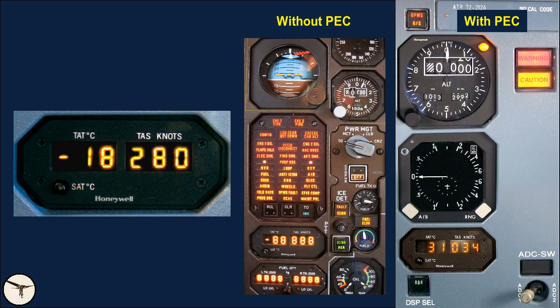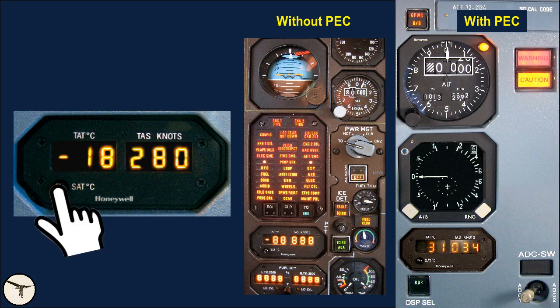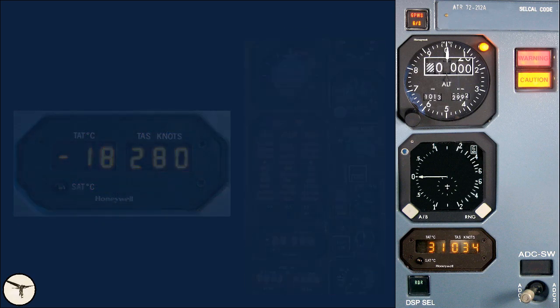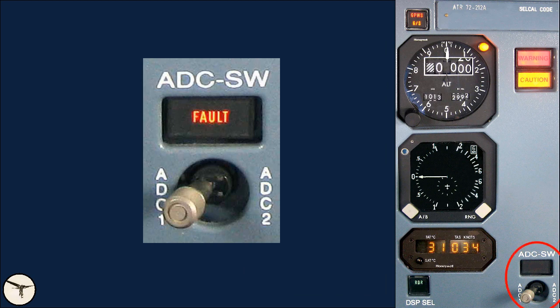The combined temperature and true airspeed indicator, depending on the ATR variant, is located below the captain's VSI or below the CAP. It shows total air temperature, TAT, and true airspeed, TAS. When you press the SAT push button, the temperature indicator shows the static air temperature. The air data computer switch allows the selected air data computer to supply the temperature and true airspeed indicator, both engine electronic controls, and the GPS. Note that the air data source for the flight instruments cannot be switched; therefore, if an air data computer fails, the affected flight instruments are lost and cannot be recovered.